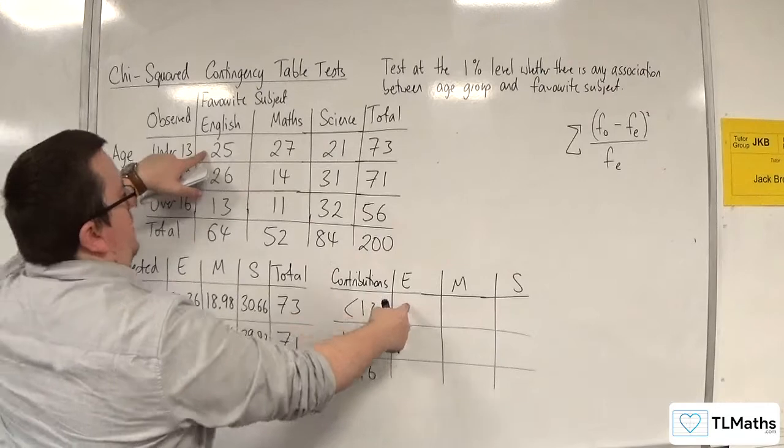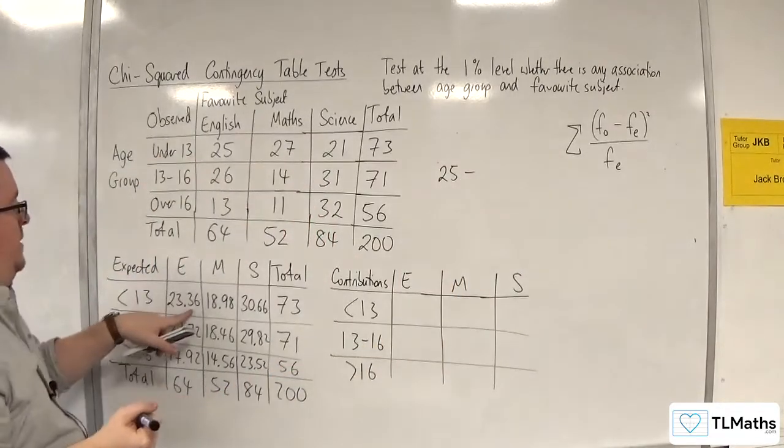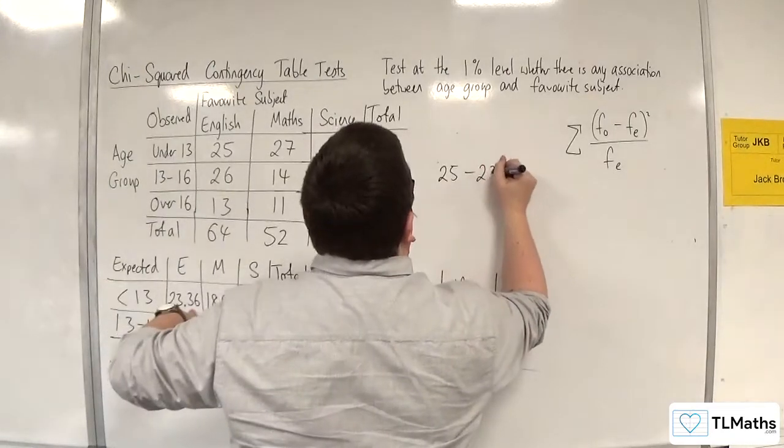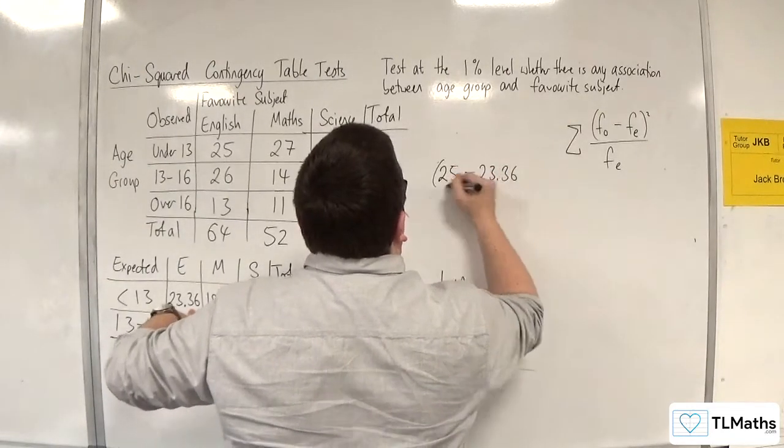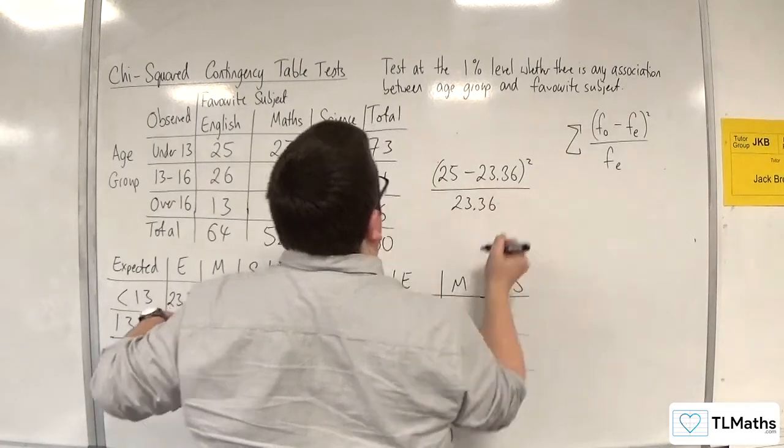So to get the corresponding value that goes in there, I need the observed number, 25, take away the expected number, 23.36. I square that and divide it by the 23.36.